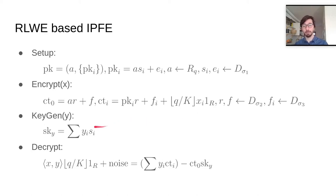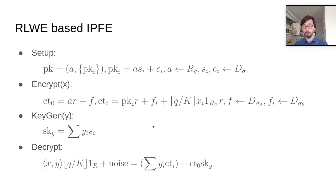But since the adversary has some information about secret values — some known directly through the functional keys, but some also leaked through the noise in the decryption — one cannot simply replace these values with uniformly random ones. Nevertheless, a similar strategy can be employed, and with a bit of resampling and also a bit of rewriting the ciphertext, one can still replace these values with some other values that statistically hide all the information that could be used for distinguishing which message was encrypted.